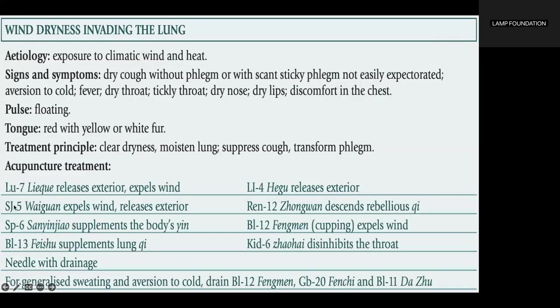Etiology: exposure to climatic wind and heat. Signs and symptoms include dry cough without phlegm or with scant sticky phlegm not easily expectorated, aversion to cold, fever, dry throat, tickly throat, dry nose, dry lips, discomfort in the chest, floating pulse, and a red tongue with yellow or white coating. Treatment principle: to clear dryness, moisten the lung, suppress cough, and transform phlegm.